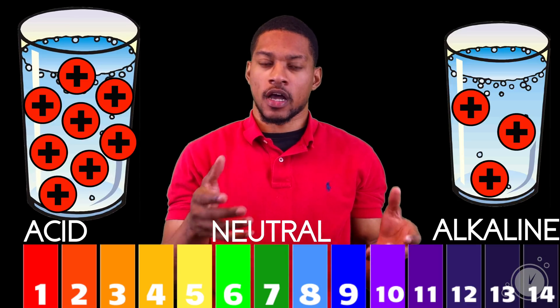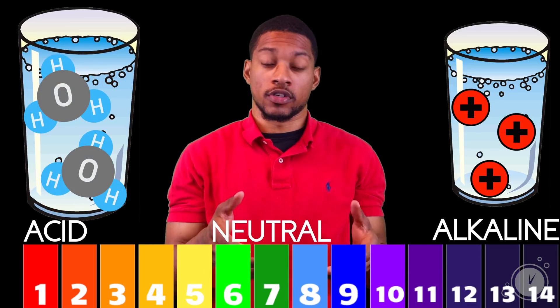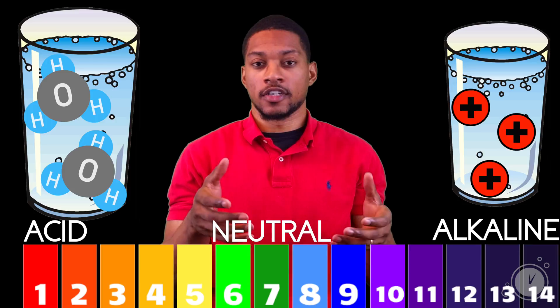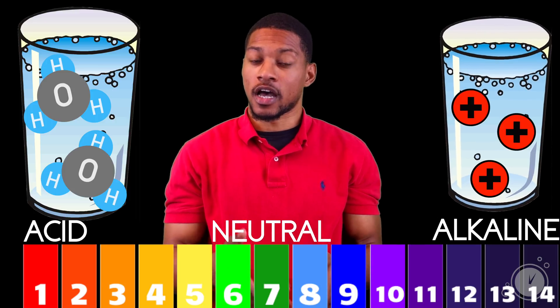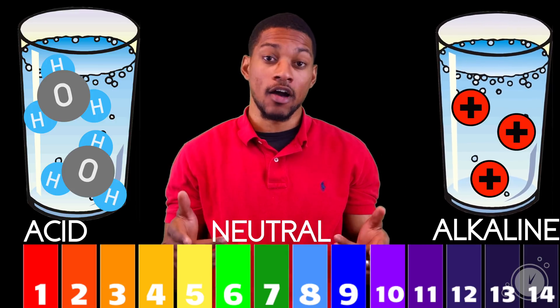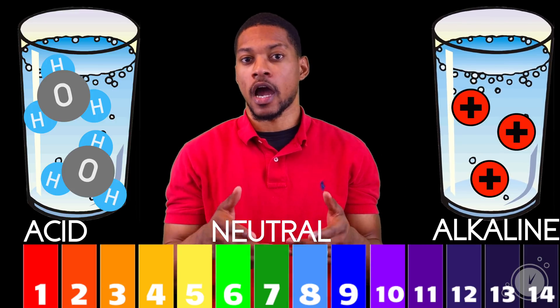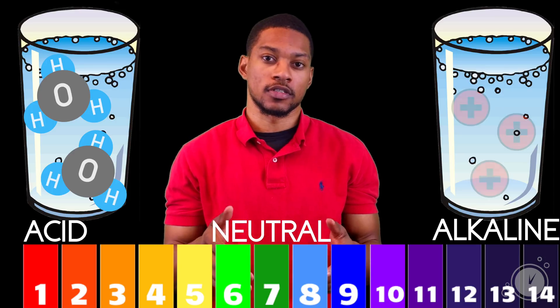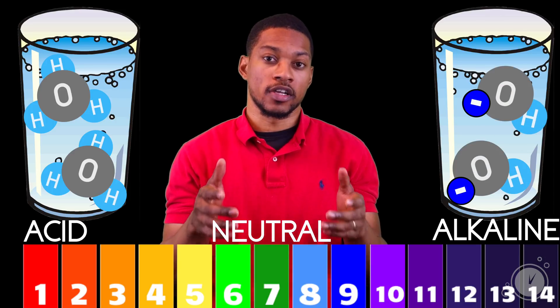Strictly speaking of acidic water, the extra hydrogen ions are in the form of hydronium, H3O+. The lack of hydrogen ions in alkaline water results in a higher concentration of hydroxide, OH-.